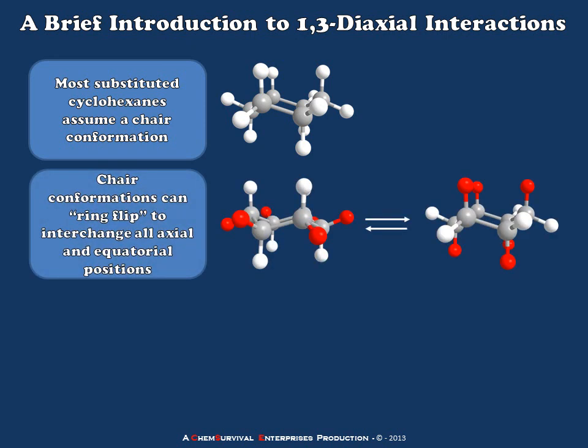But remember also that in order to do this, they have to place their substituents in two different kinds of positions — one being equatorial, as pictured on the left, and the other being axial, as pictured on the right. These two positions can be interconverted by a process commonly known as a ring flip.